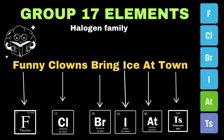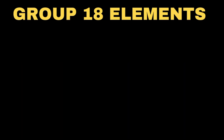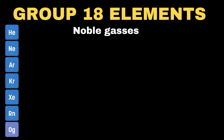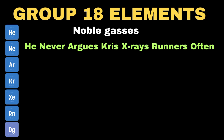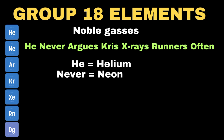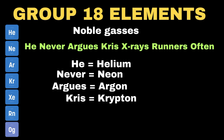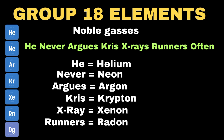Finally, moving towards the last group of subgroup A, which is group 18, also called the noble gases family. My personal trick to memorize group 18 elements is: 'He never argues, Chris x-rays runners often.' Here 'he' represents helium, 'never' refers to neon, 'argues' denotes argon, 'Chris' is used for krypton, 'x-rays' represents xenon, 'runners' refers to radon, and 'often' mentions oganesson.